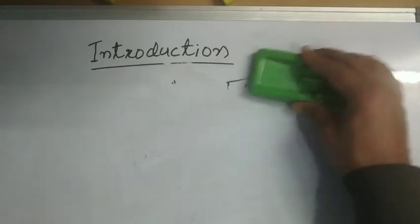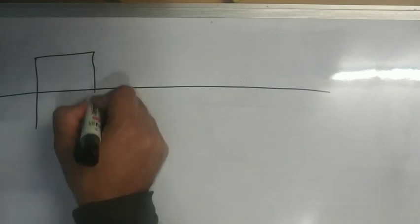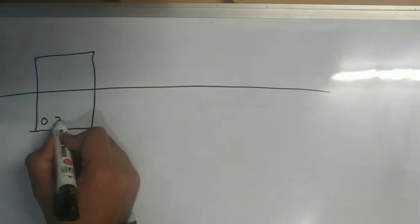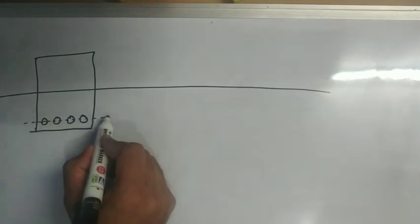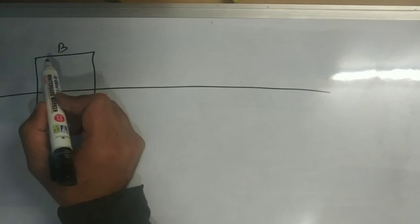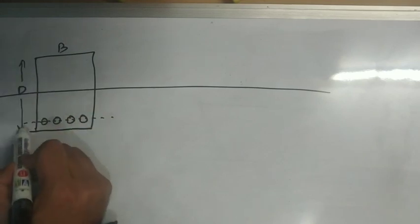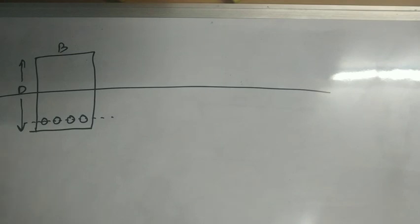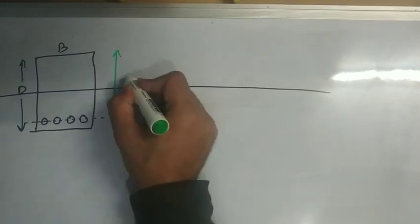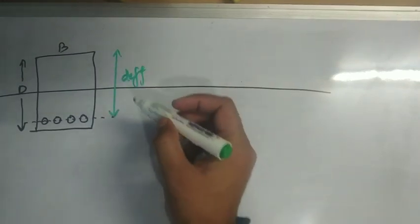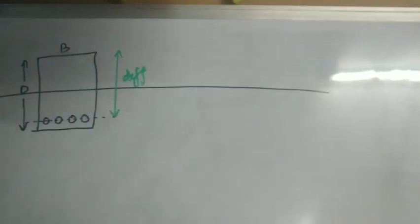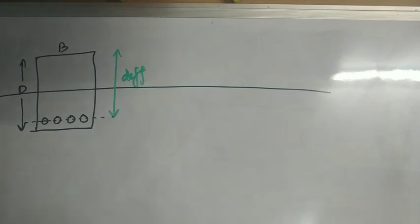Now we will move on to our next topic. This is a rectangular RCC beam section in which this is the tensile steel or tensile reinforcement. This is the center of tensile reinforcement. This is the width B of the beam cross section, and this is the overall depth D. Now here comes an important term called as effective depth. Everyone of us knows what effective depth is: it is a distance or depth from the topmost compression fiber to the center of tensile reinforcement.